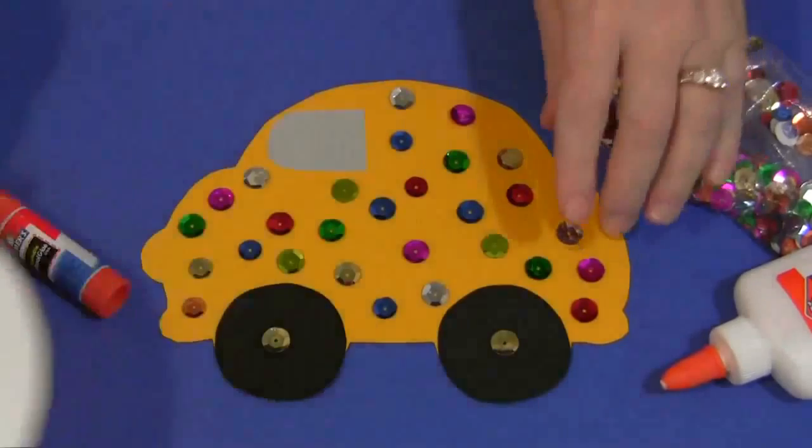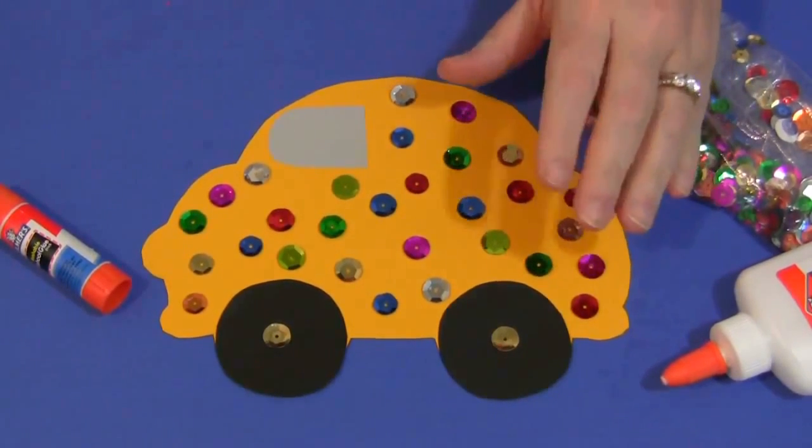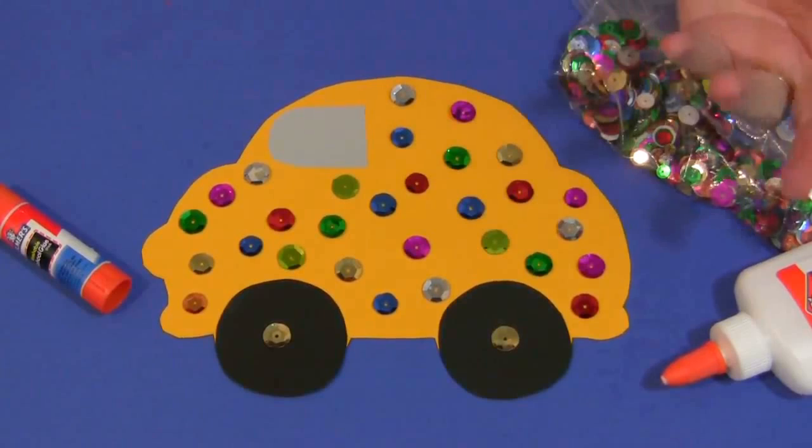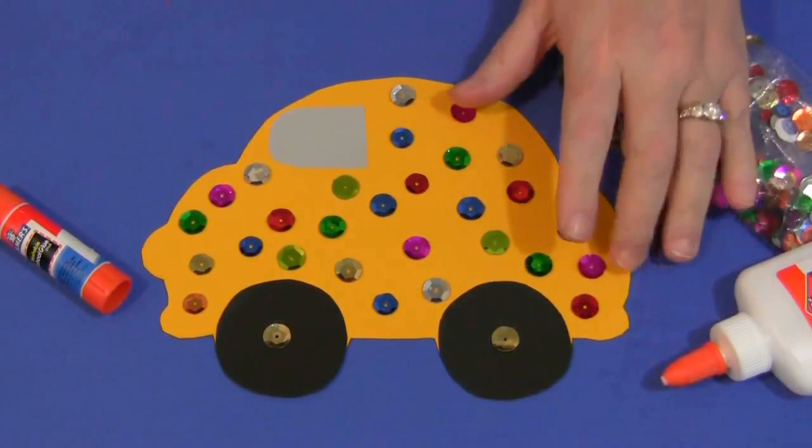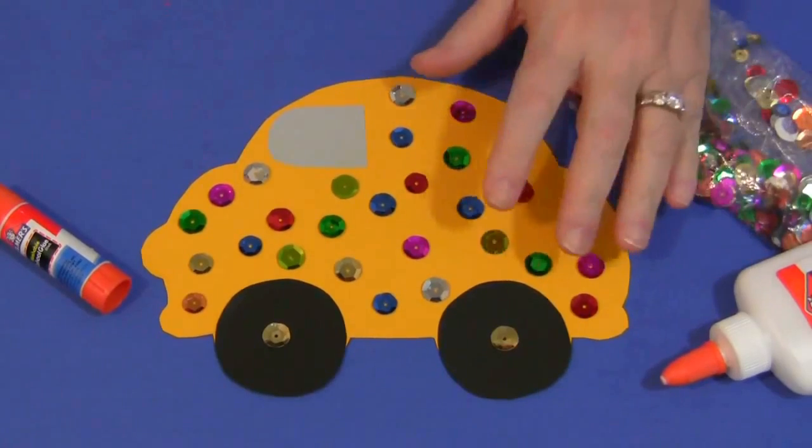I traced around it on a sheet of colored cardstock paper, which I recommend, but if you don't have that, you can use construction paper. The colored cardstock paper is thicker and will hold the weight of the sequins and the glue.